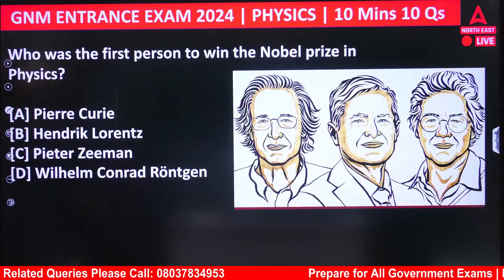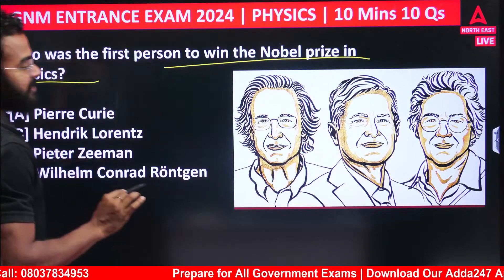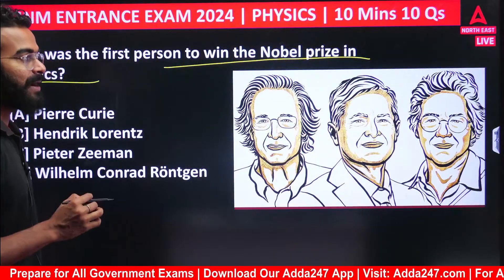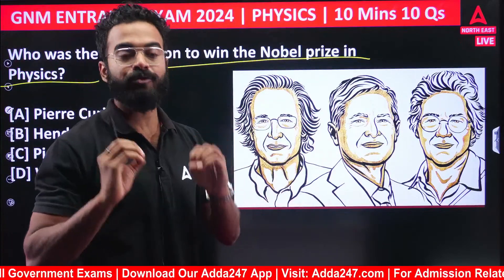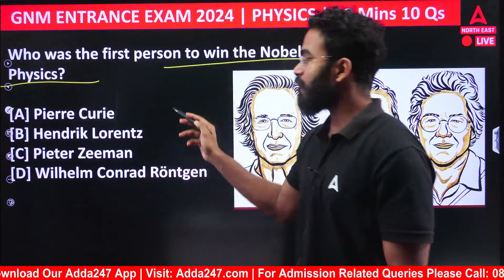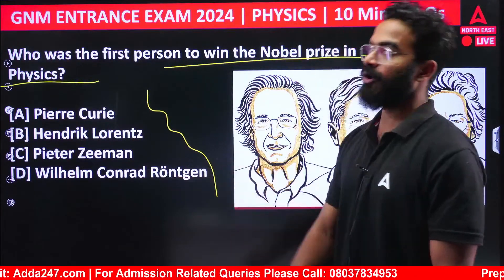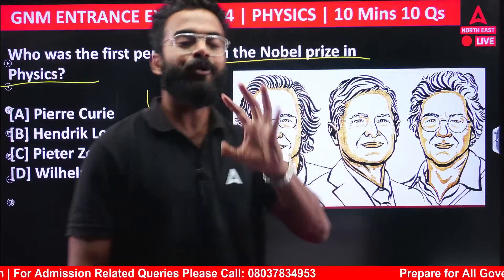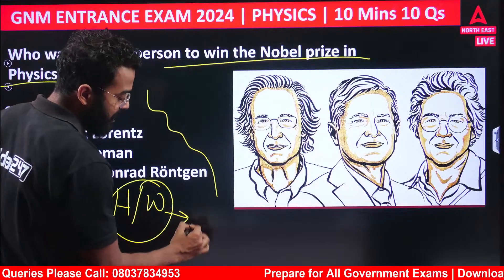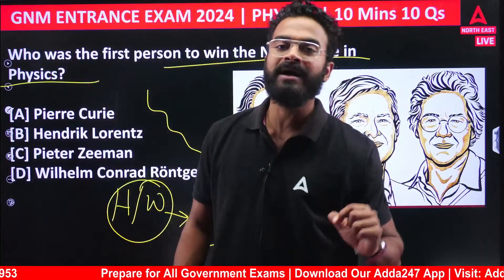Next question: who was the first person to win the Nobel Prize in Physics? The options include Henry, Peter Zimmern, and Wilhelm Conrad Röntgen. Please tell me the answer in the comment box — I will reply in the next class session.